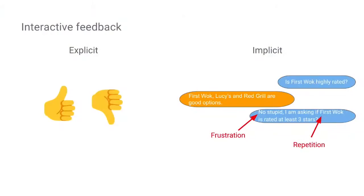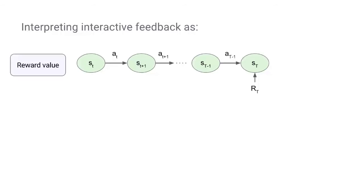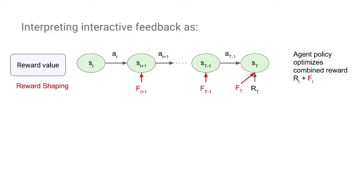Feedback can be explicit if we instruct users to provide it, or implicit where we do sentiment analysis on the user's turn to know if they had a bad experience. There are two ways to interpret this feedback: one is as a reward value — in the MDP, we add the feedback as additional rewards to the turns, where the F values are feedback rewards and the R value is the task-level reward at the end of the dialogue, and the agent policy optimizes the combined reward.